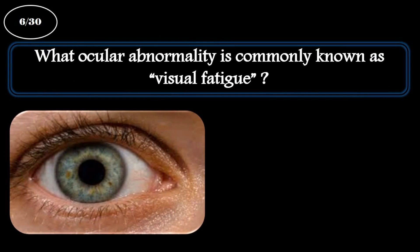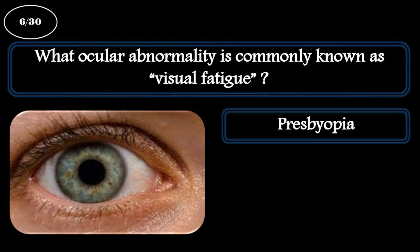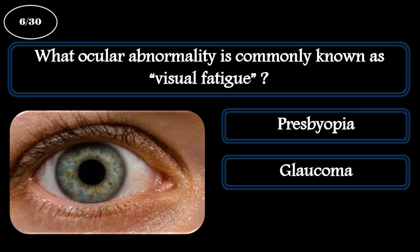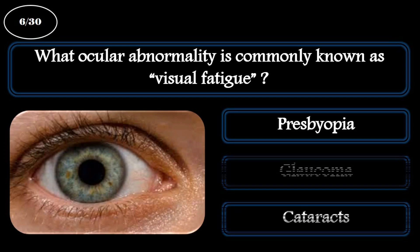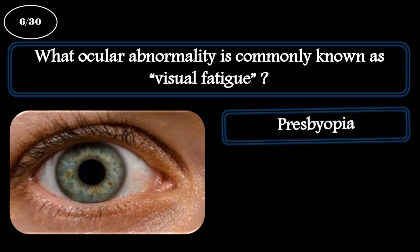Question 6. What ocular abnormality is commonly known as visual fatigue? A: Presbyopia. B: Glaucoma. C: Cataracts. The correct answer is presbyopia.